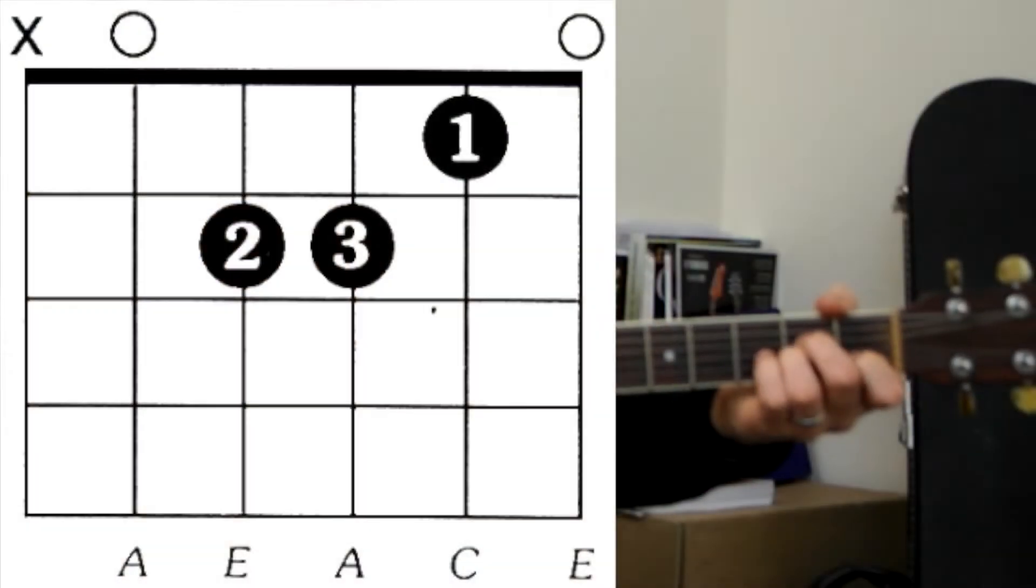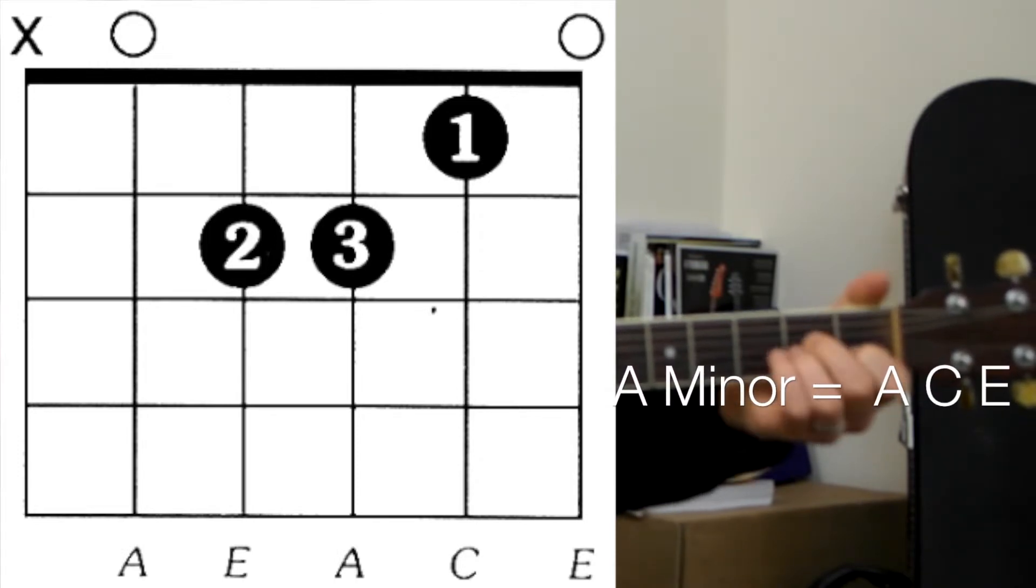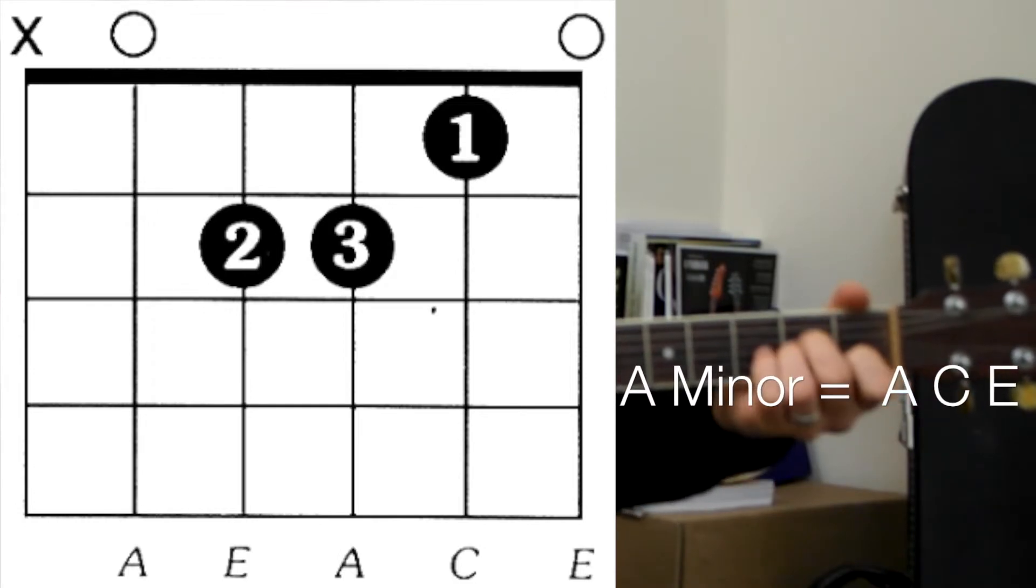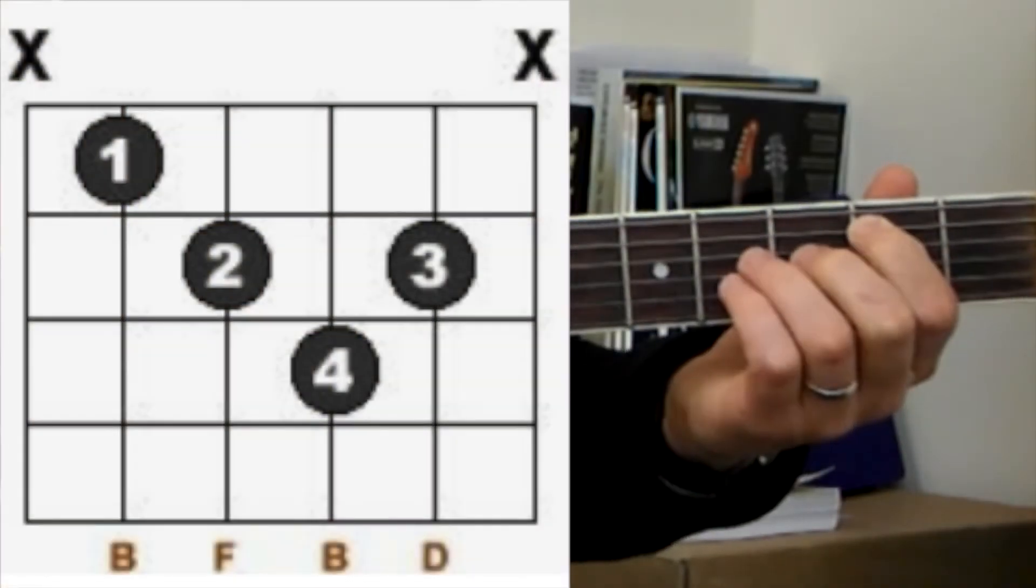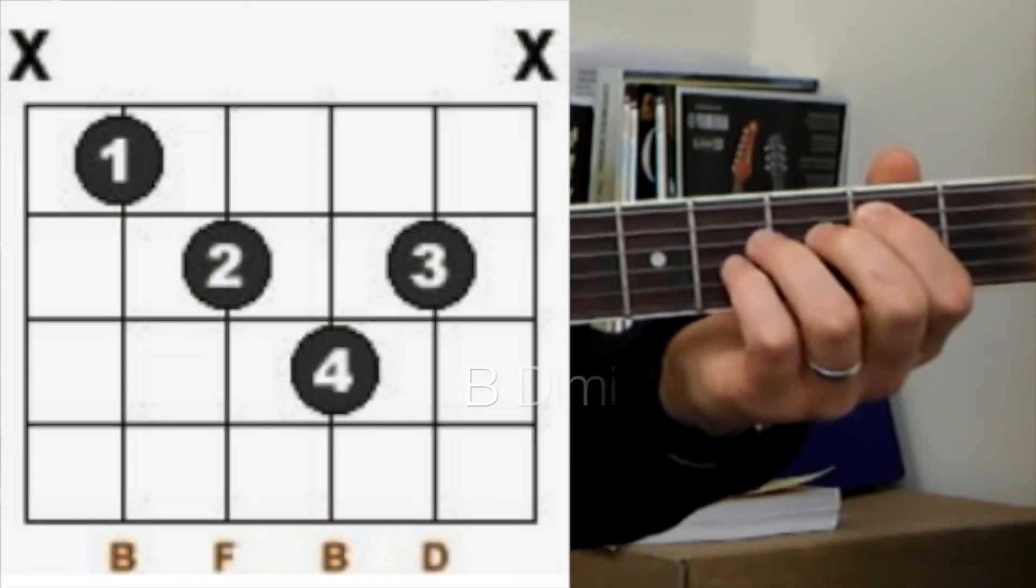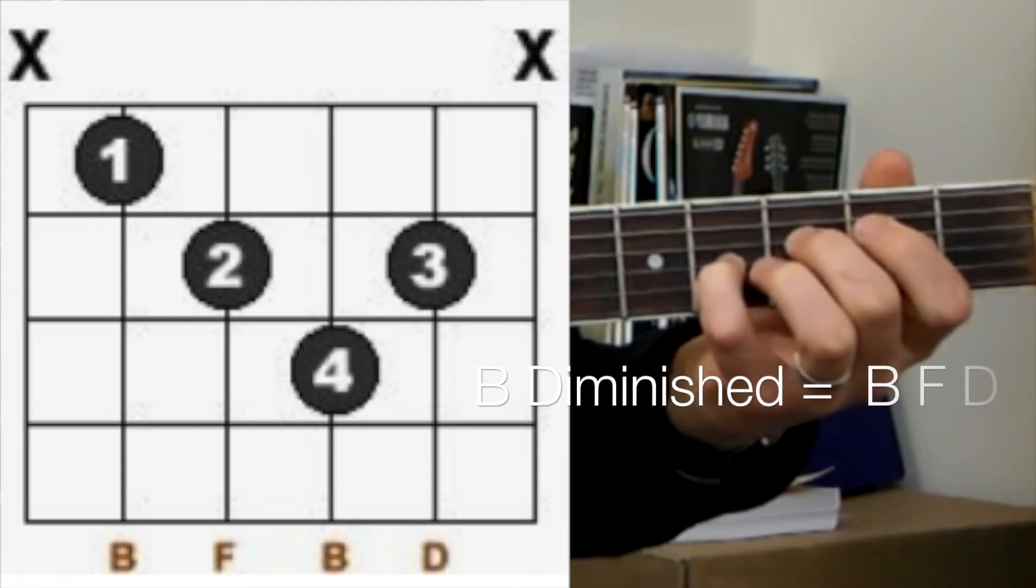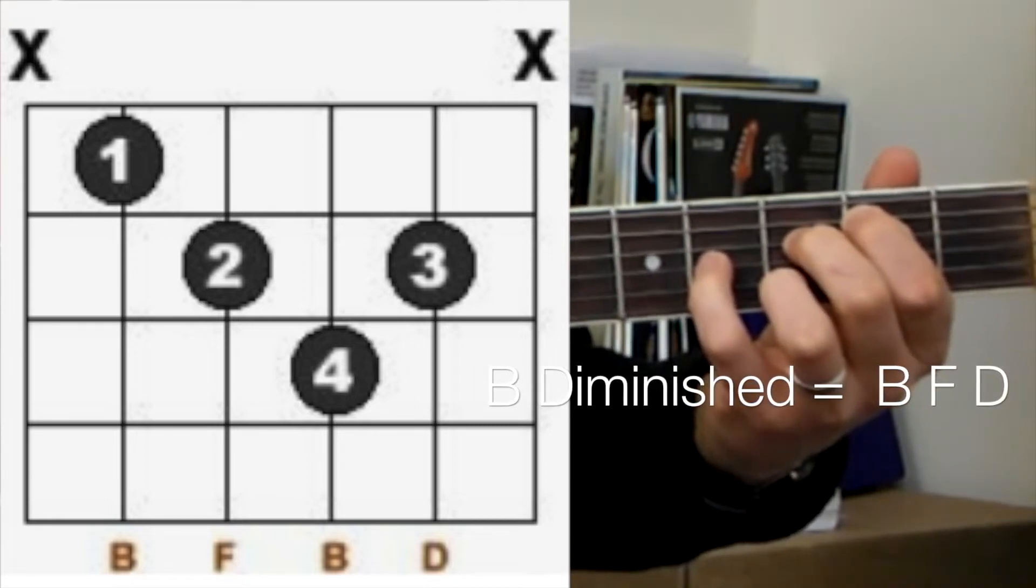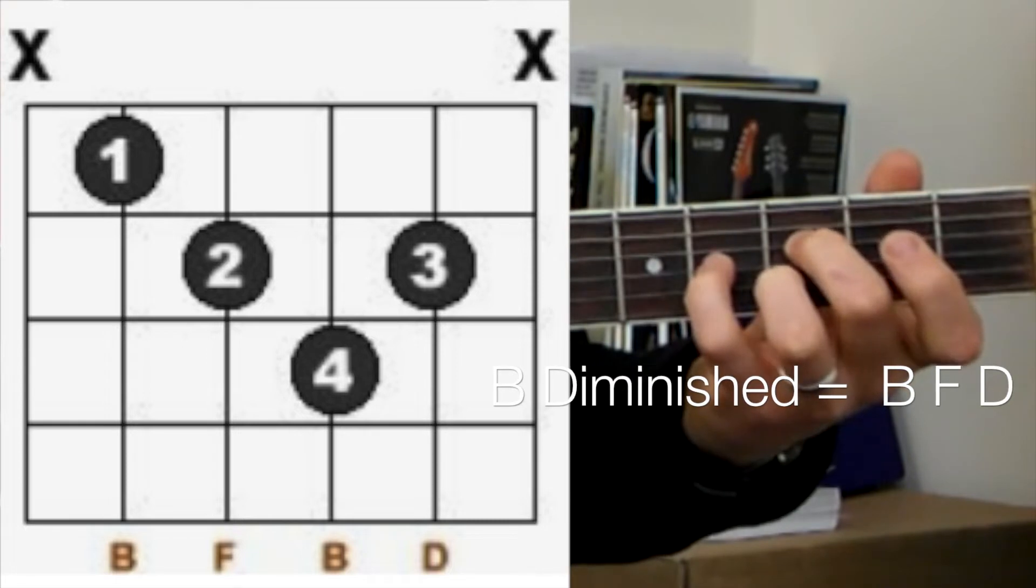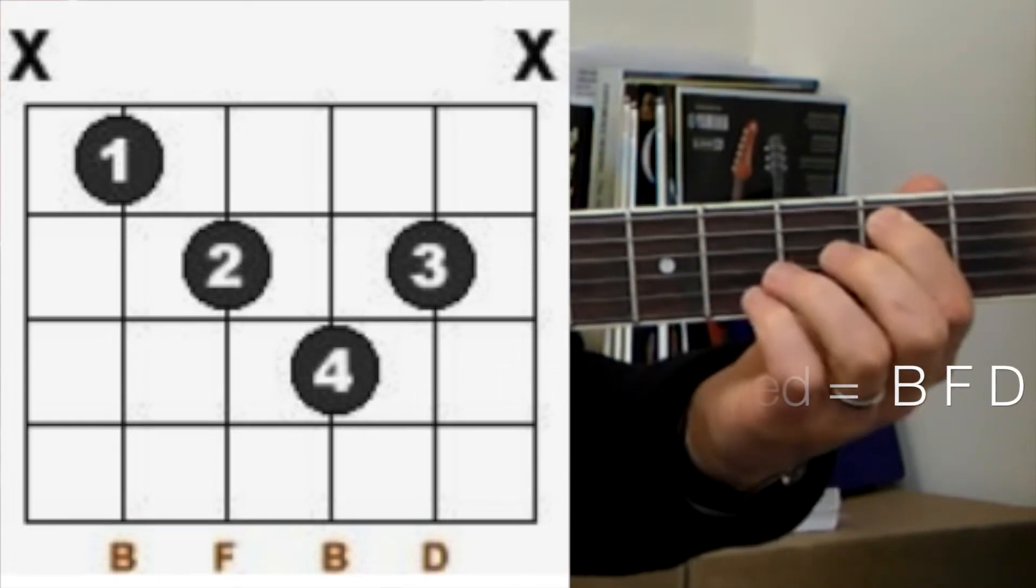And then A minor is A, C, and E. A, E, A again, C, E again. And then diminished is B, F, and D. So that's your B, that's your F, B again, and that's your D there. So it's this funny shape here. It kind of looks like your D shape, just moved up a set of strings and you add the bass note in.